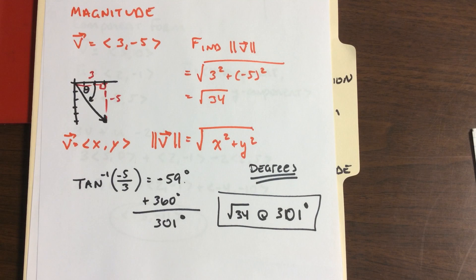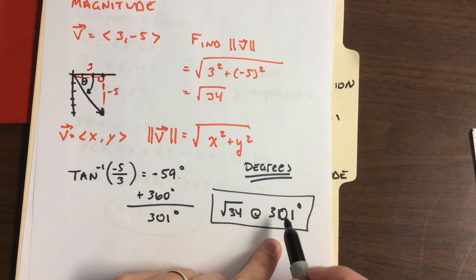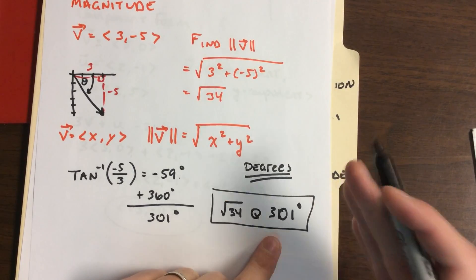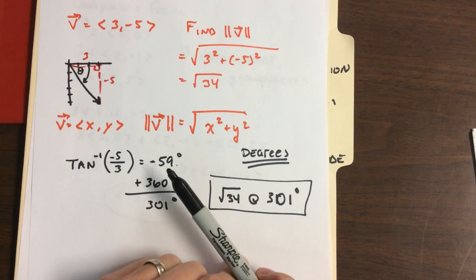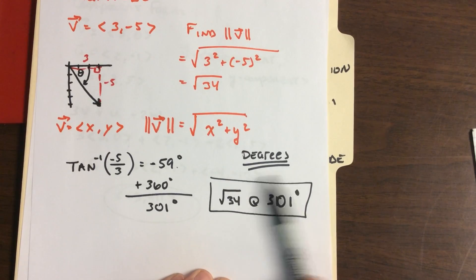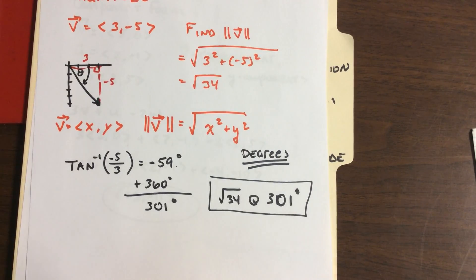So that vector <3, -5> started in component form. We can switch to standard position. We find the magnitude, we have square root of 34 at 301 degrees. Changed it from one to the next. The direction, it could be negative 59. For consistency, like following a heading, taking a bearing, usually it's 0 to 360 because you're used to seeing that around a circle. If I say 301 degrees, we know it's in quadrant 4. Negative 59 takes you an extra second. So standard communication is with a positive angle 0 to 360.